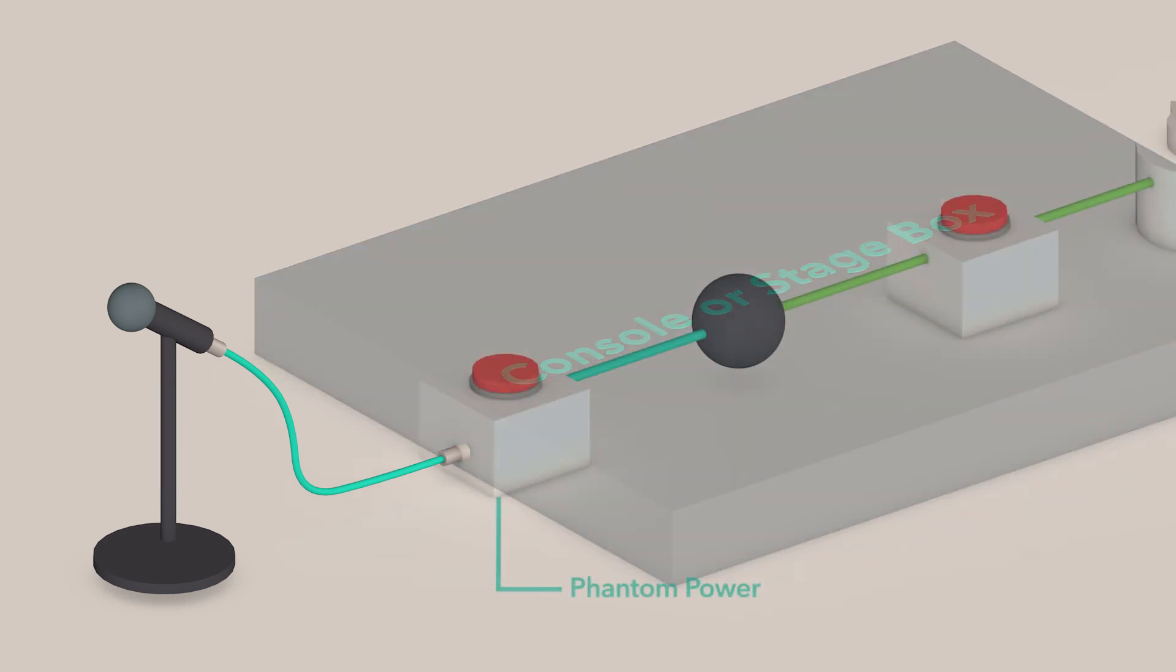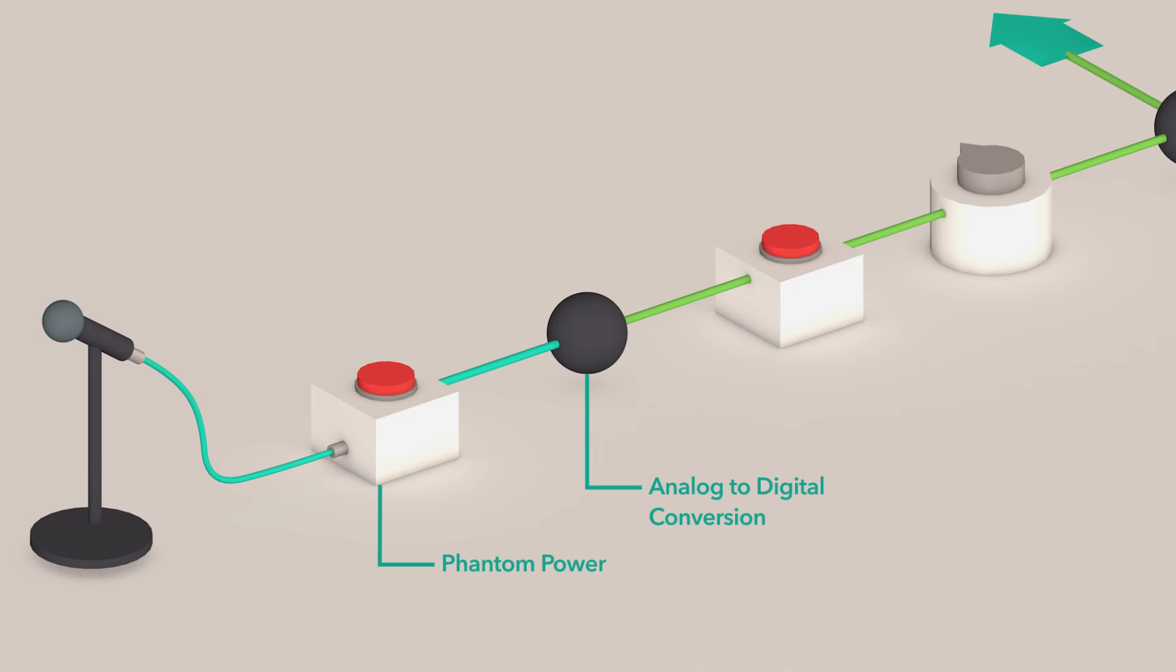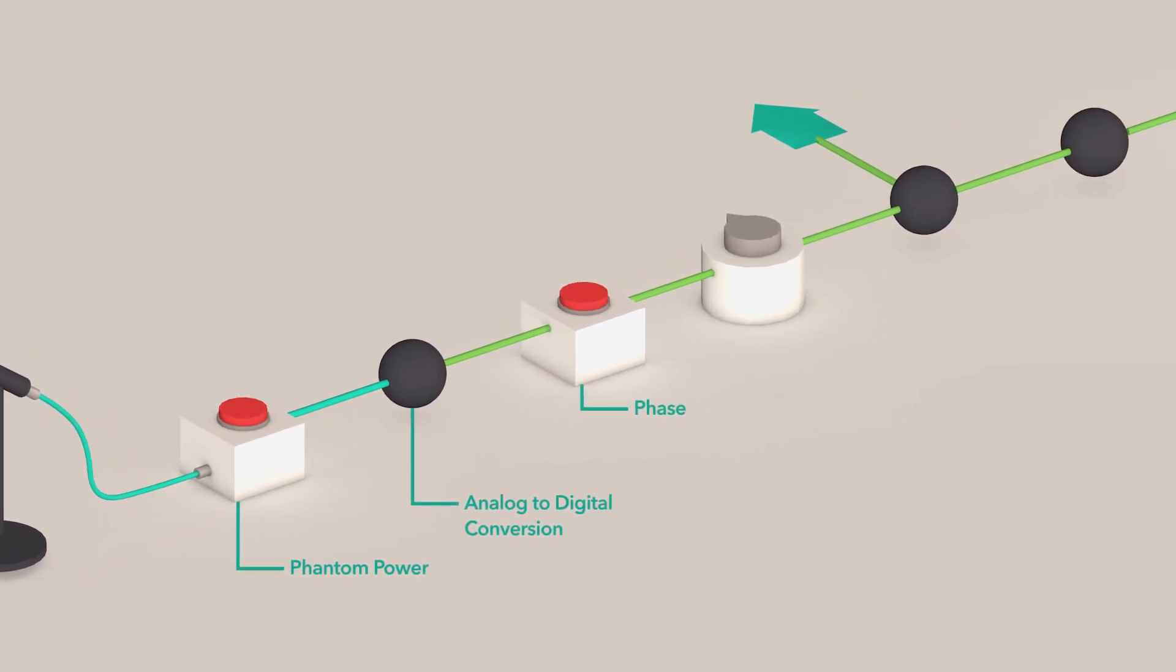If the microphone is a condenser, the phantom power button will need to be engaged. The signal will be converted from analog to digital. The phase or polarity of the signal can be toggled or changed.